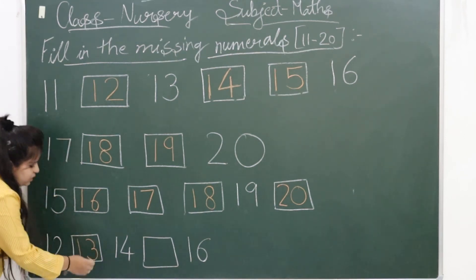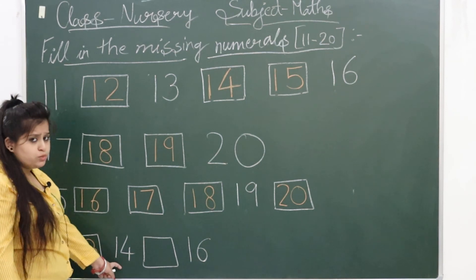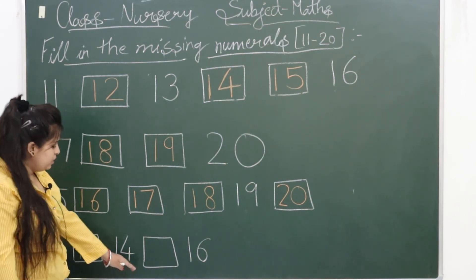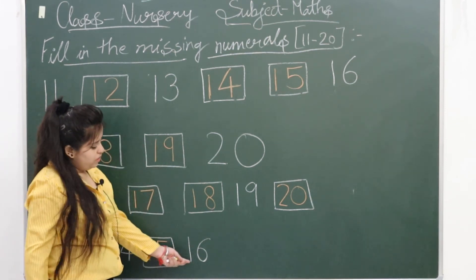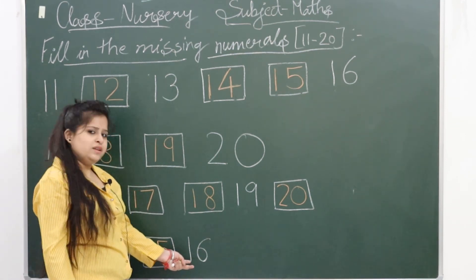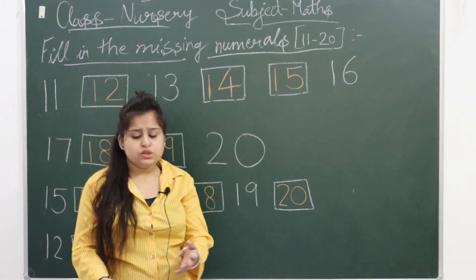So here comes 1-3 thirteen, then comes 1-4 fourteen, and then 1-5 fifteen. And this series ends with 1-6 sixteen.